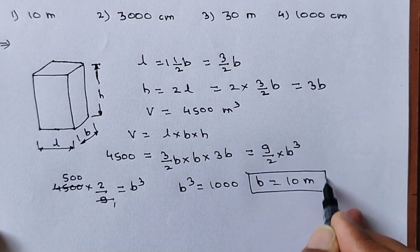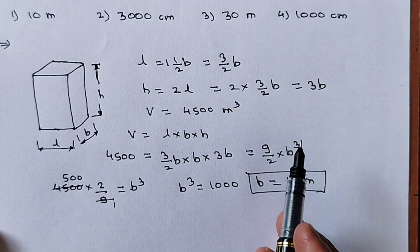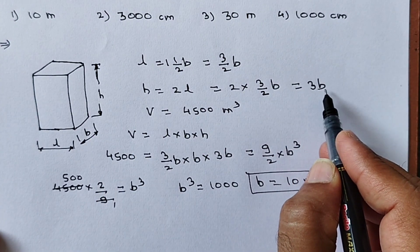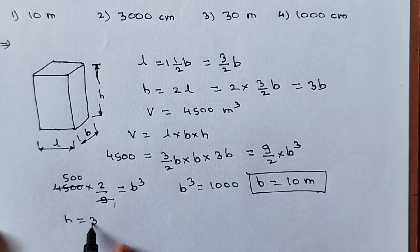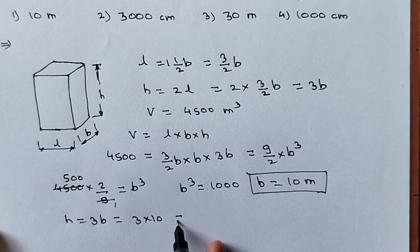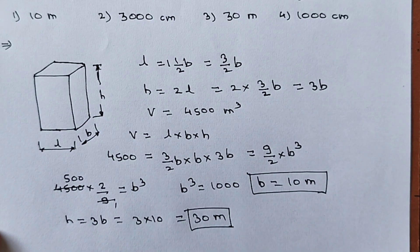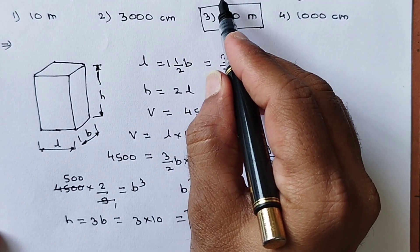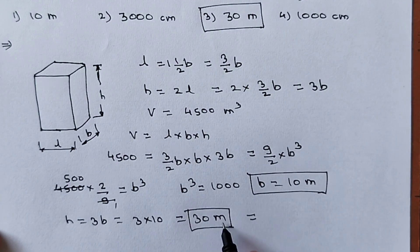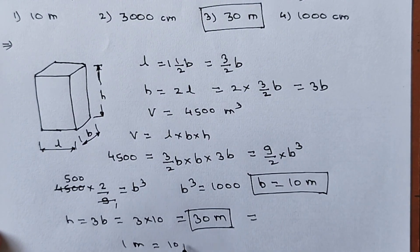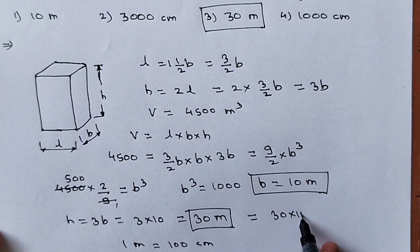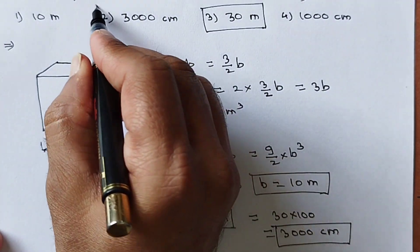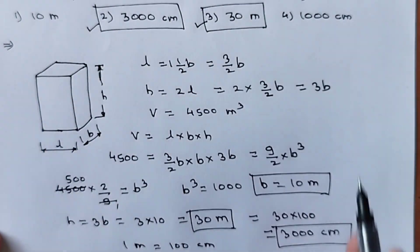We got the breadth B = 10 meters. But what is asked? The height of the tank. H = 3B = 3 × 10 = 30 meters. Now the question asks to choose two correct options. 30 meters is option 3. Converting: 1 meter = 100 centimeters, so 30 meters = 30 × 100 = 3000 centimeters. So 3000 centimeters is option 2. Therefore options 2 and 3 are the correct ones.